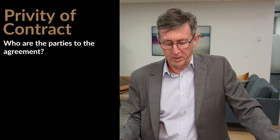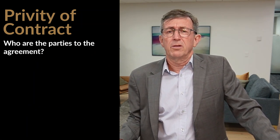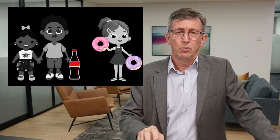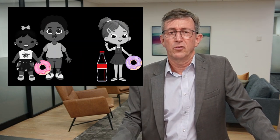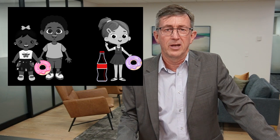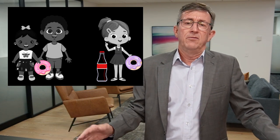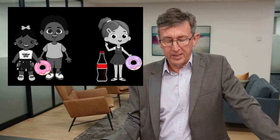Then there is the issue of privity of contract — a great legal term that just means who are the parties to the agreement. In our playground example, if one child said 'if you give a donut to my sister, I will give you a drink,' the parties to the contract are the one with the drink and the one with the two donuts. The question becomes whether a third party can enforce the arrangement. The Contract and Commercial Law Act provides answers to many of those circumstances, but it really takes you into agency law — where one party is contracting on behalf of others — and that's much too big a subject for today.